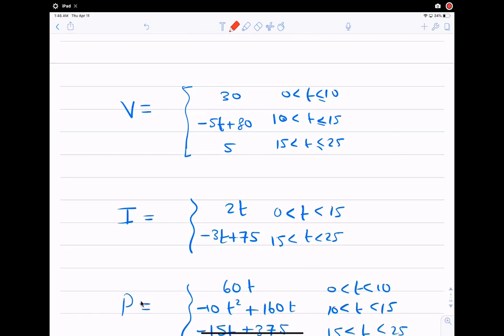Now I have this function from 0 to 15 and from 15 to 25, and those are the two equations. So 2t, negative 3t plus 75. I put them here. Now you want to find the power. Now all of us know that the power equals V times I, correct? So I have here three intervals. Here, two. How would I decide the intervals for P?